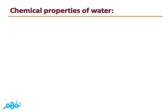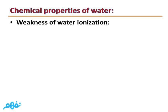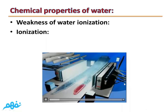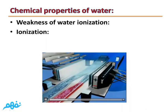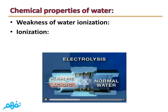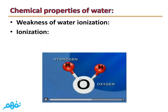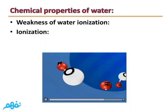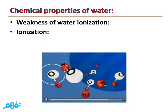Let's talk about chemical properties of water. The first is the weakness of water ionization. As you can see from this video, this is neutral water. When it passes between two electrodes, it will change into a negative hydroxide ion and a positive hydrogen ion.